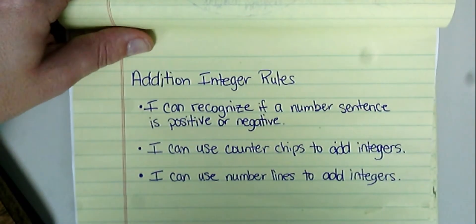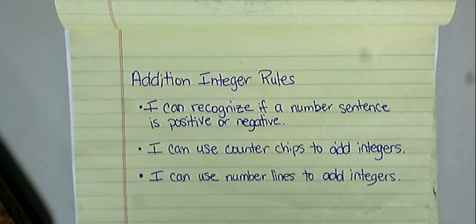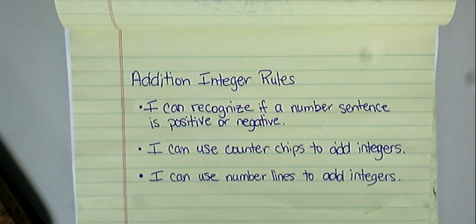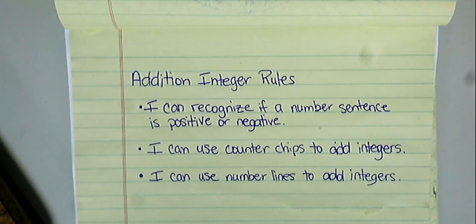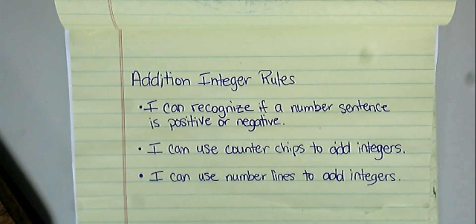Good day, ladies and gentlemen, seventh graders. Quick review from last week: we talked about the introduction to rational numbers, integers, fractions, and decimals. We talked about opposites and absolute value, and we are going to this week add on to that and start talking about addition and subtraction of integers. We'll start with integers, but this applies to all rational numbers — fractions and decimals as well — but we'll focus on integers because that's the easiest thing to look at first.